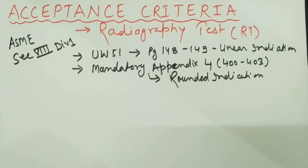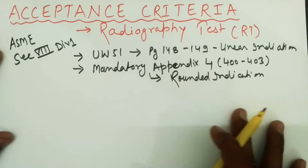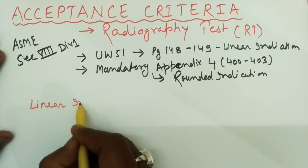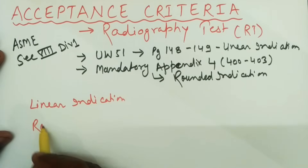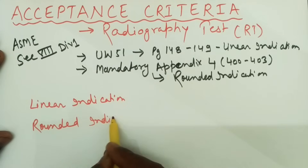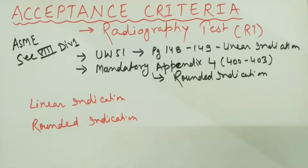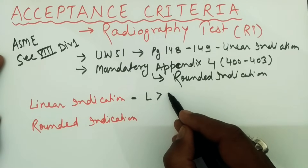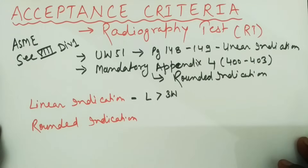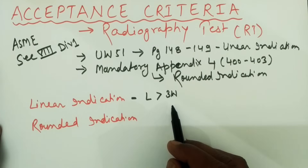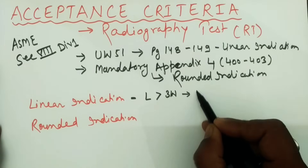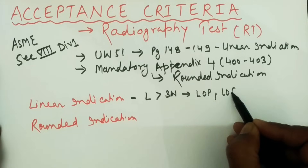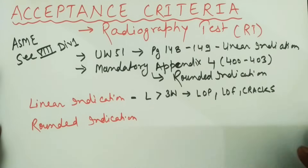For those who don't know the difference between linear and rounded indications: a linear indication is one in which the length of the indication is greater than three times the width of the indication. In linear indications we mostly find lack of penetration (LOP), lack of fusion, cracks, and similar defects.